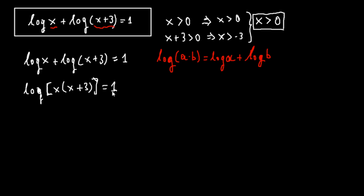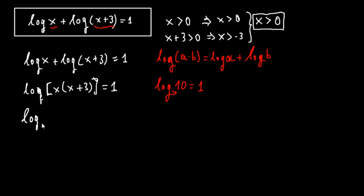Now we must observe that here we have 1. To proceed with the solution, we must write 1 as log₁₀(10) with base 10, which we know equals 1. So we can write it as log of x times (x plus 3) equals log 10.